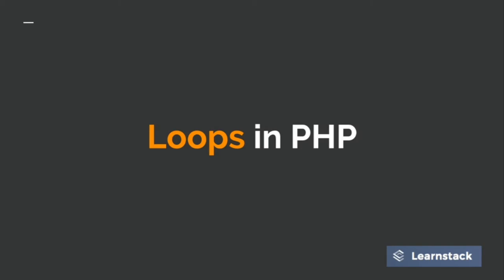In PHP there are four kinds of loops: the first one is the for loop, the second one is while, the third one is do-while, and there is one more loop known as the foreach loop. We are going to cover the first three loops in this video and we will do the foreach loop after the array tutorial.